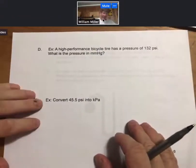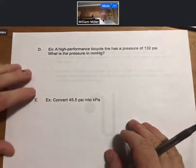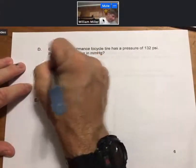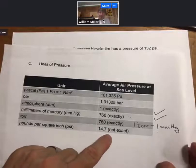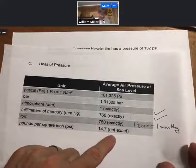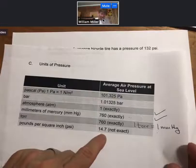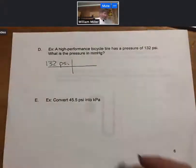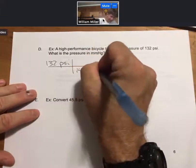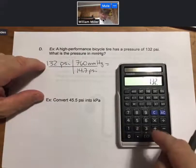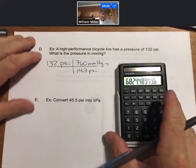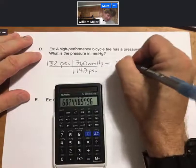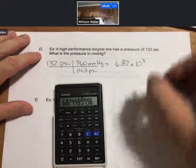As an example, a high-performance bicycle tire has a pressure of 132 PSI. What is the pressure in millimeters of mercury? We see that 14.7 pounds per square inch, which is not exact but three sig figs are okay, is equal to 760 millimeters of mercury. 132 times 760 divided by 14.7, I get 6824. I'm going to put that in scientific notation: 6.82 times 10 to the third millimeters of mercury.